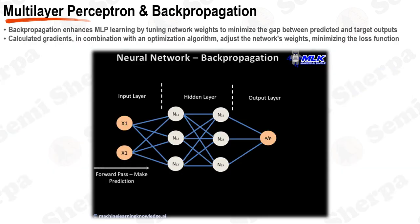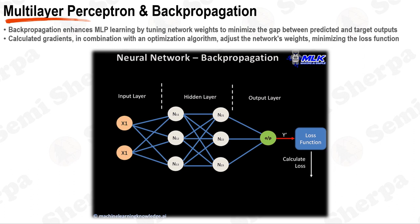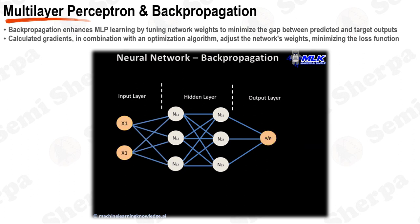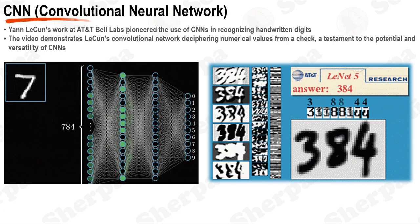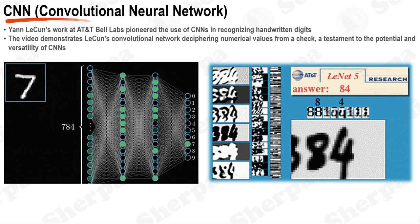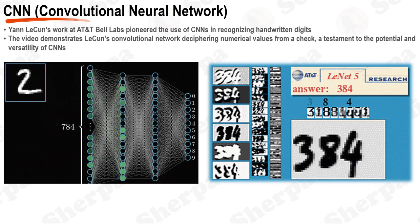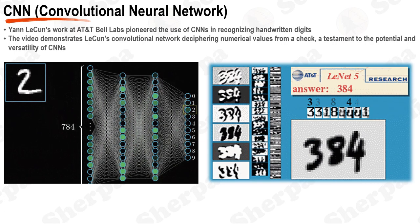Backpropagation is a supervised learning method that fine-tunes multi-layer Perceptrons (MLPs) by adjusting network weights to diminish the disparity between predicted and actual outputs. A loss function, computed at the output layer, quantifies this discrepancy. Initiated from the output layer and moving retrogressively through hidden layers, gradients are calculated. These gradients, combined with an optimization algorithm, are employed to revise the network's weights, thereby minimizing the loss function. This transformative algorithm ushered in a wave of early accomplishments in artificial intelligence and machine learning, particularly in the domain of convolutional neural networks (CNNs).